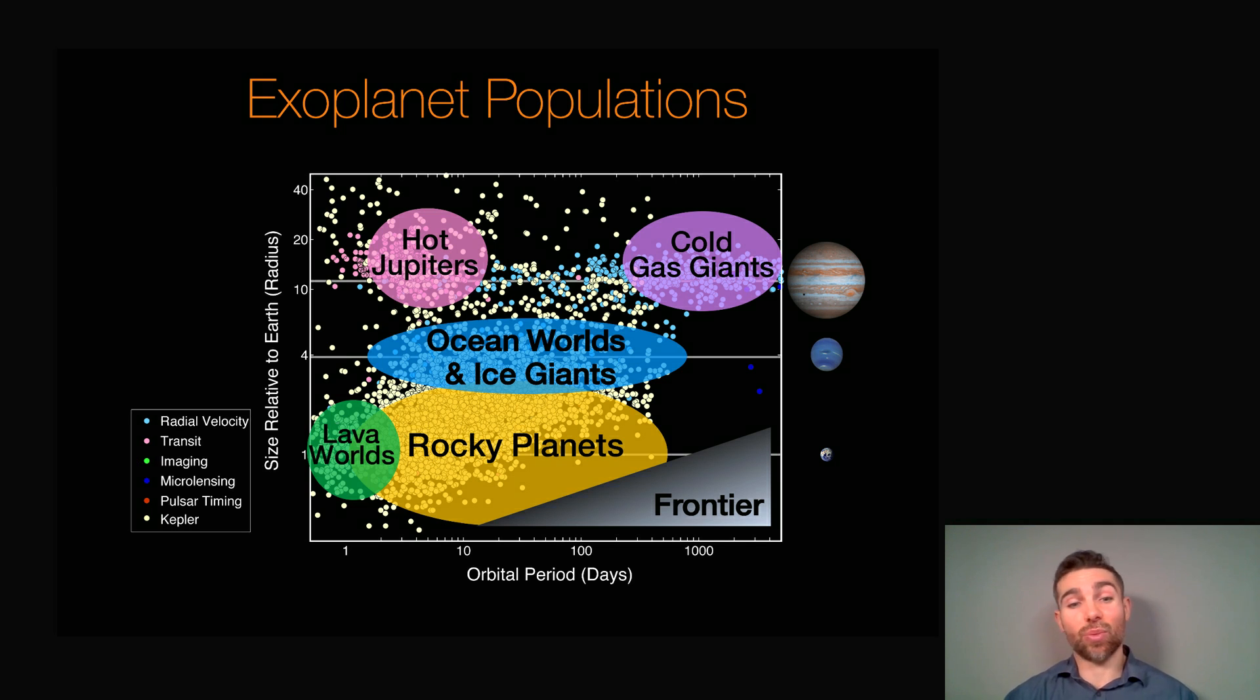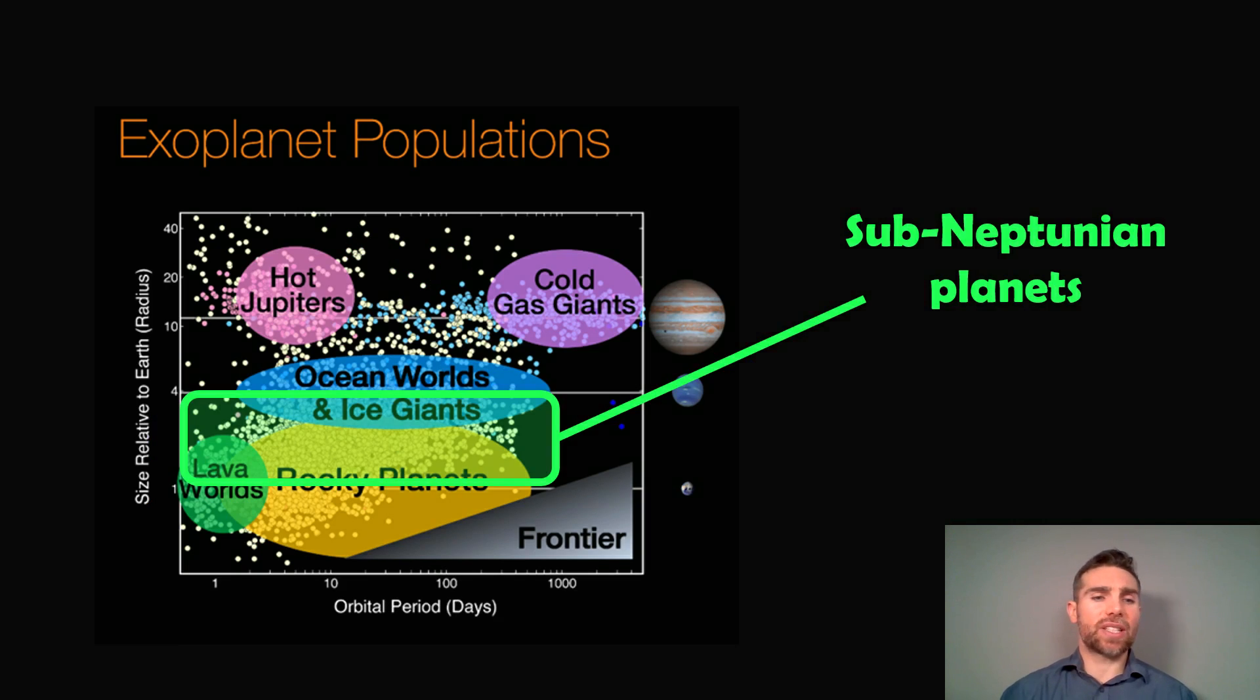Rocky planets, which are terrestrial planets. And you've got lava worlds, which are rocky planets very close to their star. And their surfaces are basically just magma oceans or lava. Now, the ones we're interested in for this video sit approximately here on that plot. These are sub-Neptunian planets.